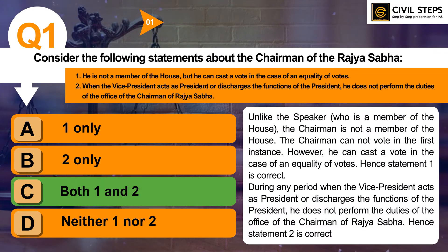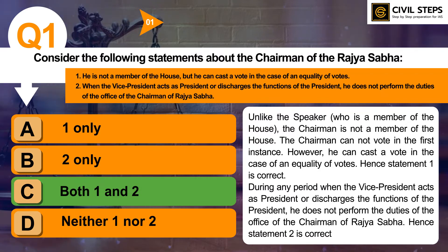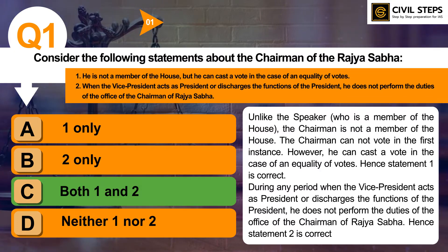Statement 1 is correct because unlike the Speaker, the Chairman is not a member of the House. The Chairman cannot vote in the first instance; however, he can cast a vote in the case of an equality of votes. Hence, Statement 1 is correct. About Statement 2, during any period when the Vice President acts as President or discharges the functions of the President, he does not perform the duties of the Office of the Chairman of Rajya Sabha. Hence, Statement 2 is correct.